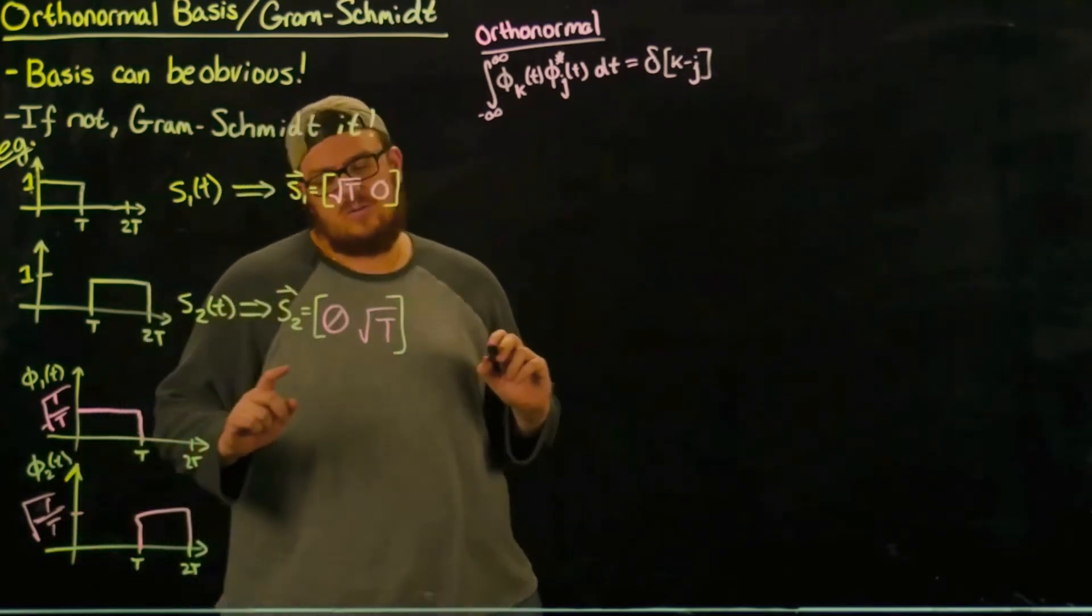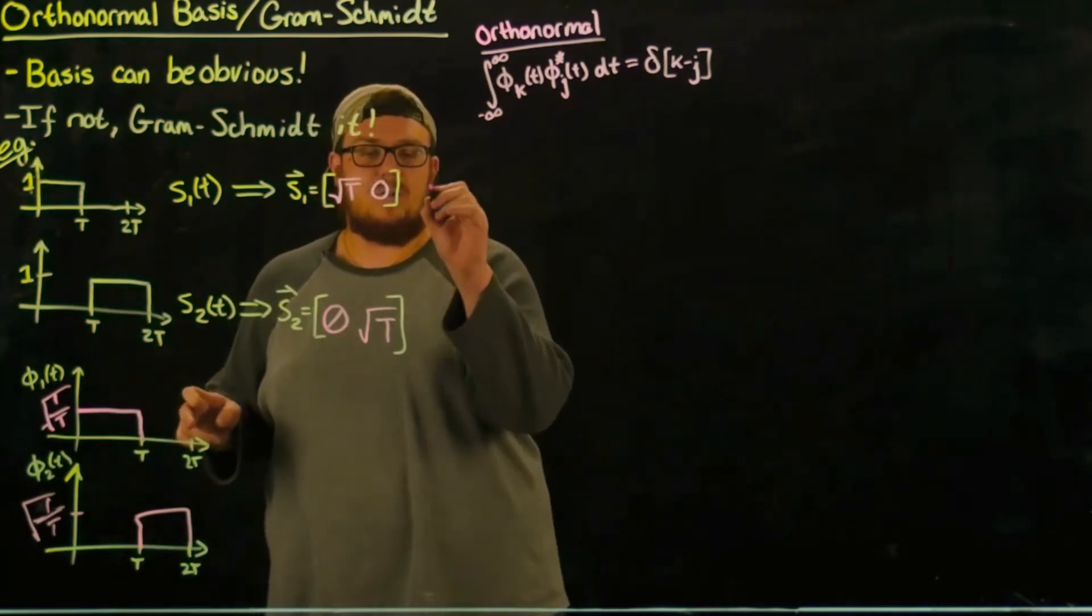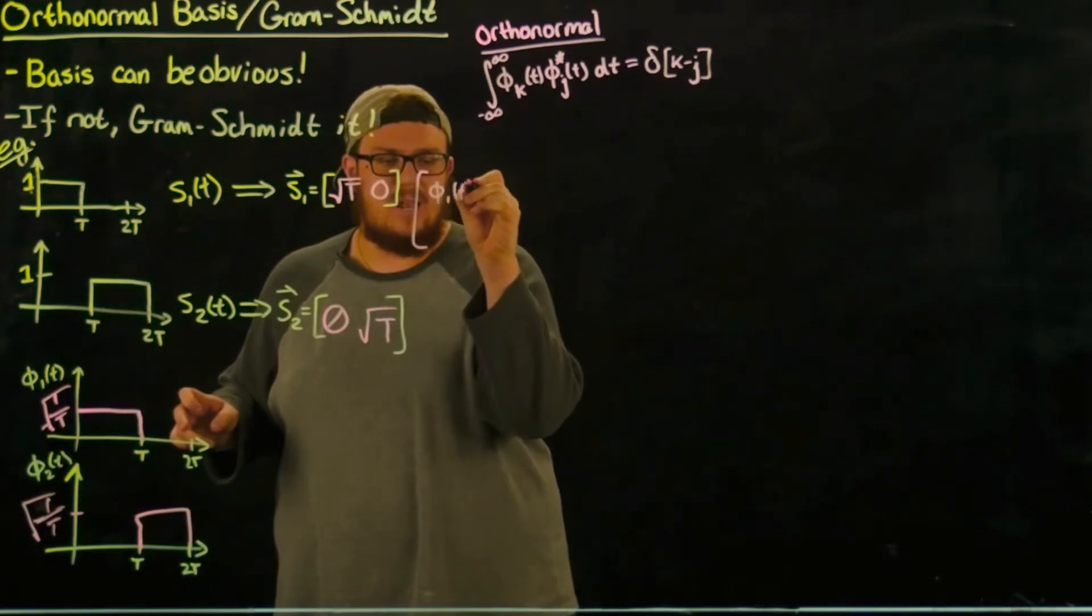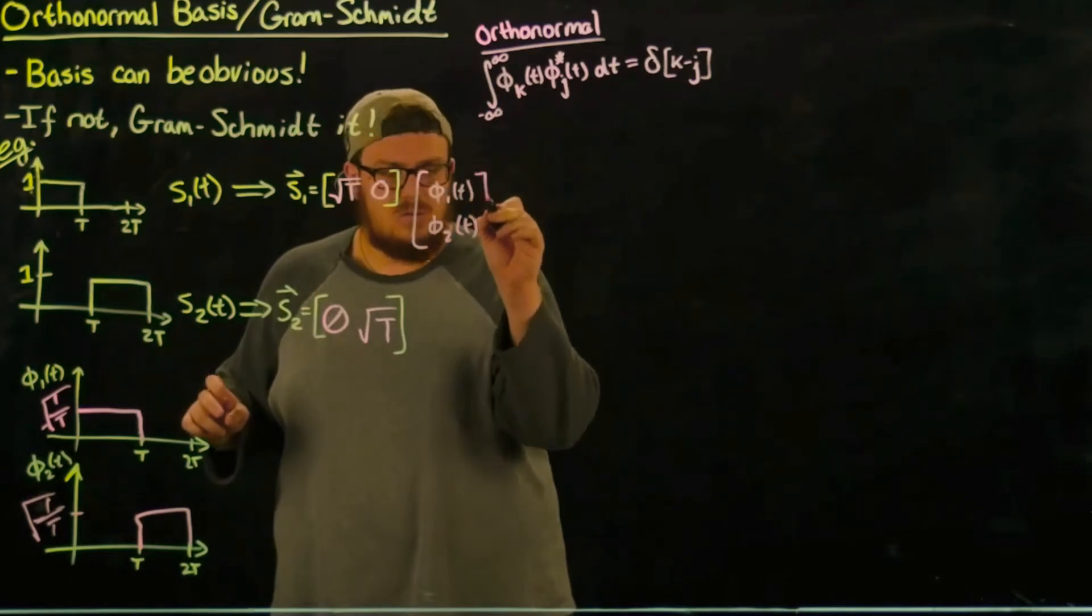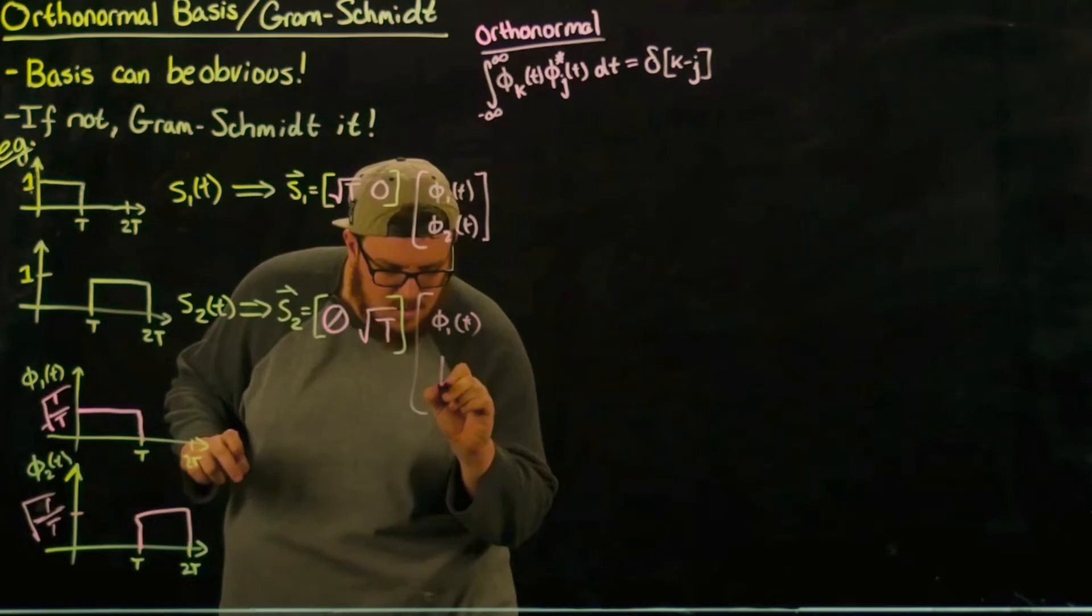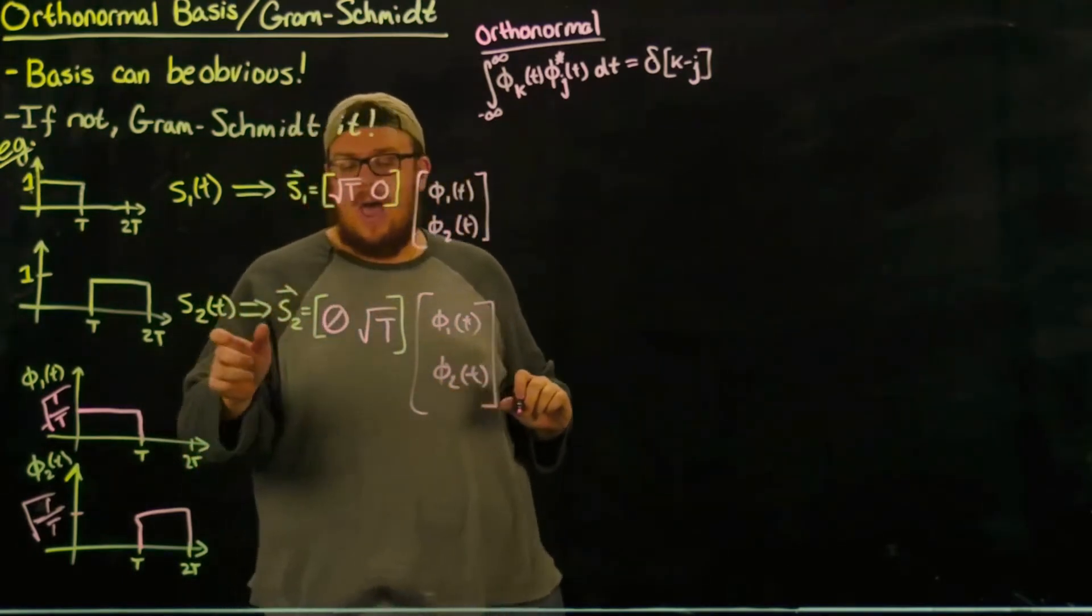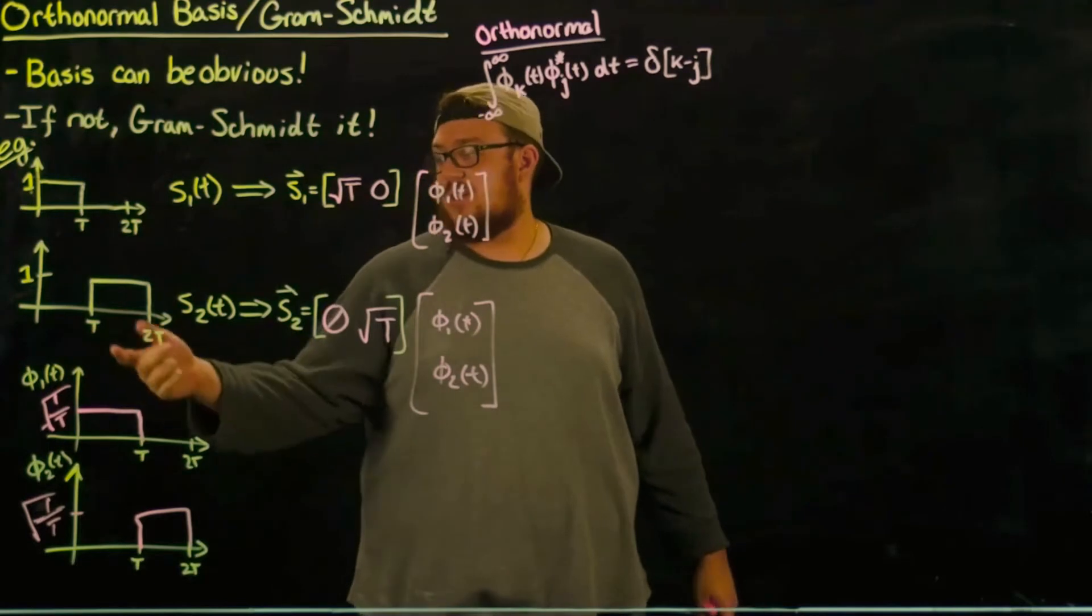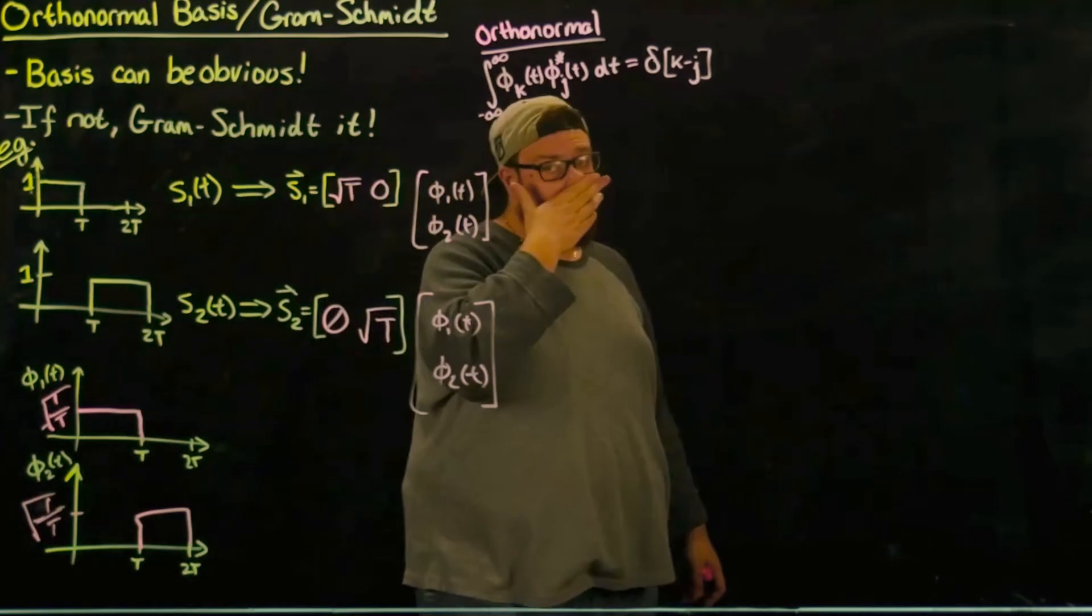So now if I take these vectors and multiply them by [φ_1(t), φ_2(t)] like this, we actually get back these original signals because we get √T times this which gives us back our original signal, and we get √T times this which gets us back our original signal s_2, which is exactly what we wanted to represent.